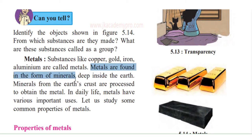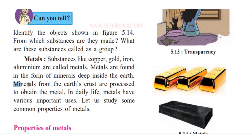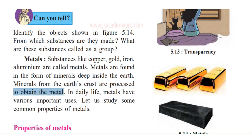Metals are found in the form of minerals deep inside the earth. Deep down inside the earth's crust we find these minerals. Minerals from the earth's crust are processed — that is, they are mined, removed out, and then processed and cleaned. There is a lot of processing that goes on to obtain the metal. All metals are found at a particular place at a large scale, and that is where mining starts.